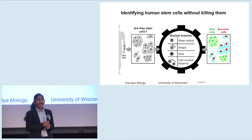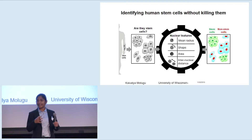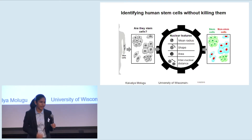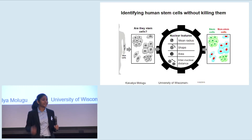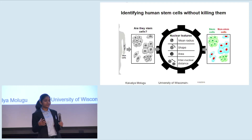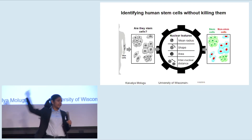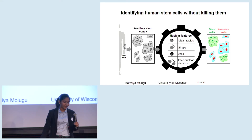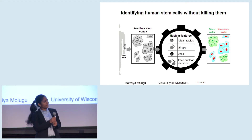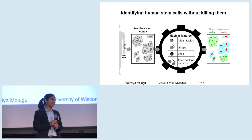This process of converting mature cells in your body, like skin cells or blood cells, into stem cells is called reprogramming. We do this because stem cells made from a patient can be converted into different, healthier cell types that can be put back into the patient to cure their disease. But the problem with reprogramming is that it is very inefficient.